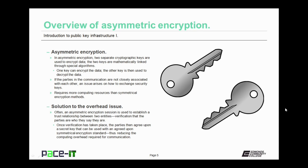If the parties in the communication are not closely associated with each other, an issue arises on how to securely exchange security keys. Asymmetric encryption requires more computing resources than symmetrical encryption methods. Often an asymmetrical encryption session is used to establish a trust relationship between two entities — a verification that the parties are who they say they are. Once the verification has taken place, the parties then agree upon a secret key that can be used with an agreed-upon symmetrical encryption standard, which reduces the computing overhead required for communication.